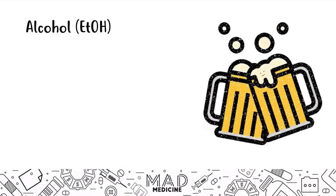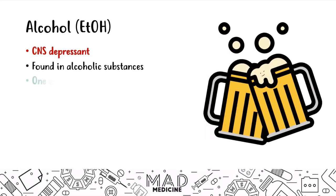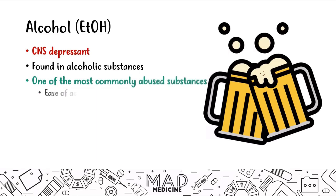Alcohol is something everyone knows about. It's a CNS depressant, and that's why you get drunk and have debilitating side effects from alcohol, especially when it comes to your mental capacity. It's found in alcoholic substances and is one of the most commonly abused substances out there, mainly because of its ease of access and mind-altering effects. Both these things combined make it very easily abused.